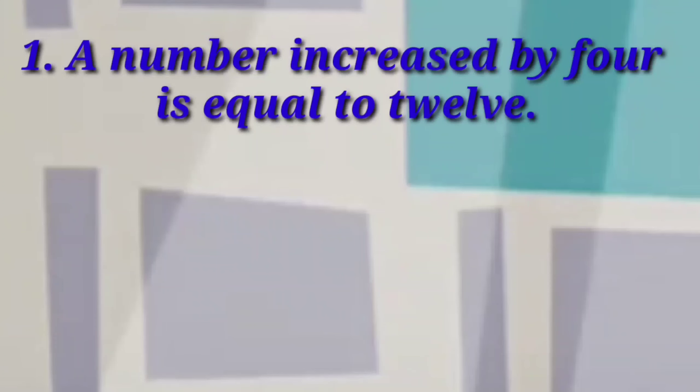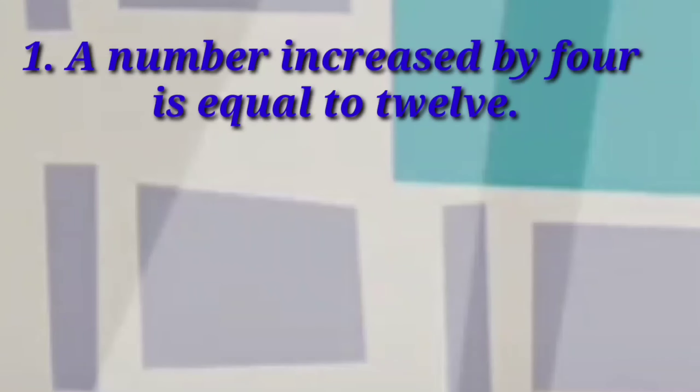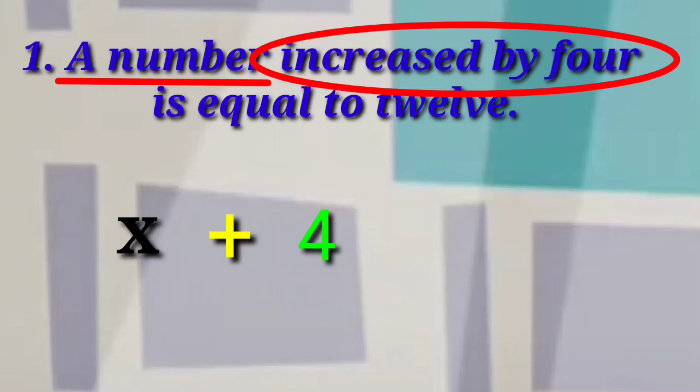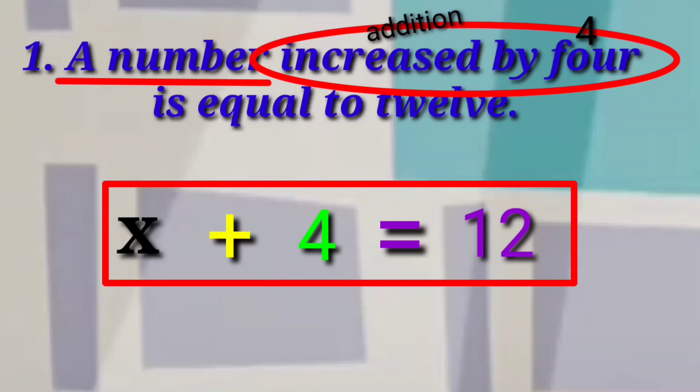A number increased by four is equal to twelve. I'll use X as a variable for a number. I add four to this variable X because it increased by four. Increased means addition. It means that you add something to a variable. A variable plus four is equal to twelve. So, the algebraic equation in this situation is X plus four equals twelve.